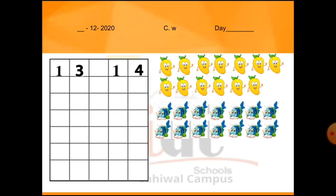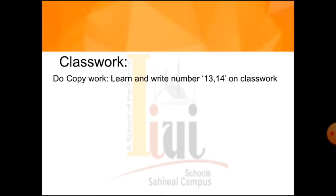Ab hum next page pe kaam aapne karna hai. Next page pe aapne draw karni hain fourteen triangles, aur aapne seven mein us mein color karne hain. Jo aapne triangles draw karni hain unka size bahut bada nahi hoga — aapne chhoti triangles draw karni hain aur saath mein usmein color karna hai. Teacher ne aapko classwork ka kaam karwa diya hai — classwork 13 aur 14 apni copy pe write kar liya hai, aur draw 14 triangles bhi kar liye hain.